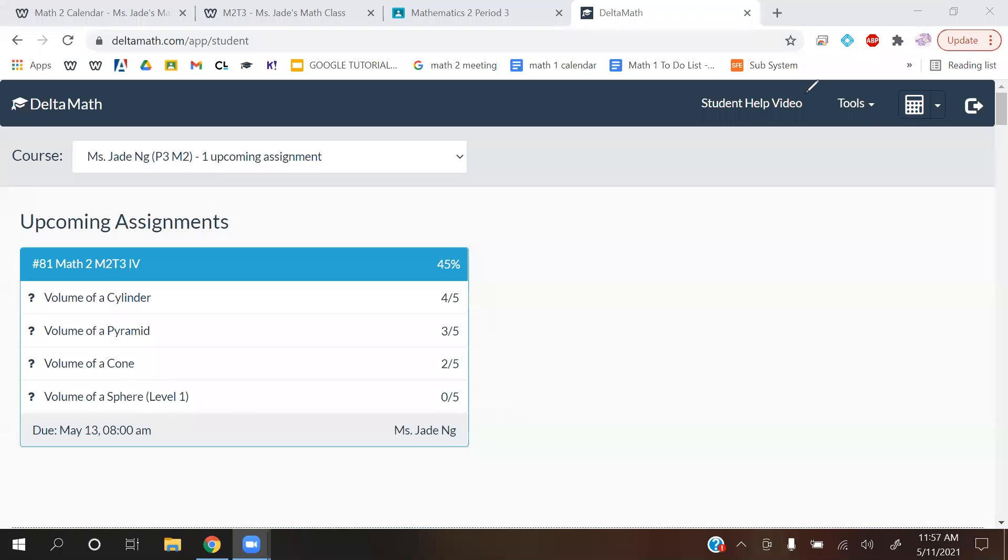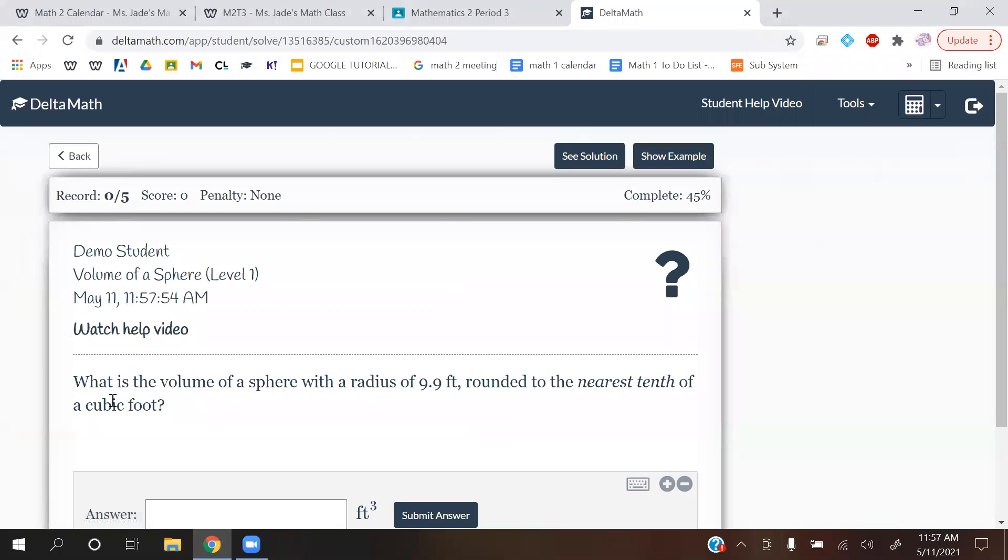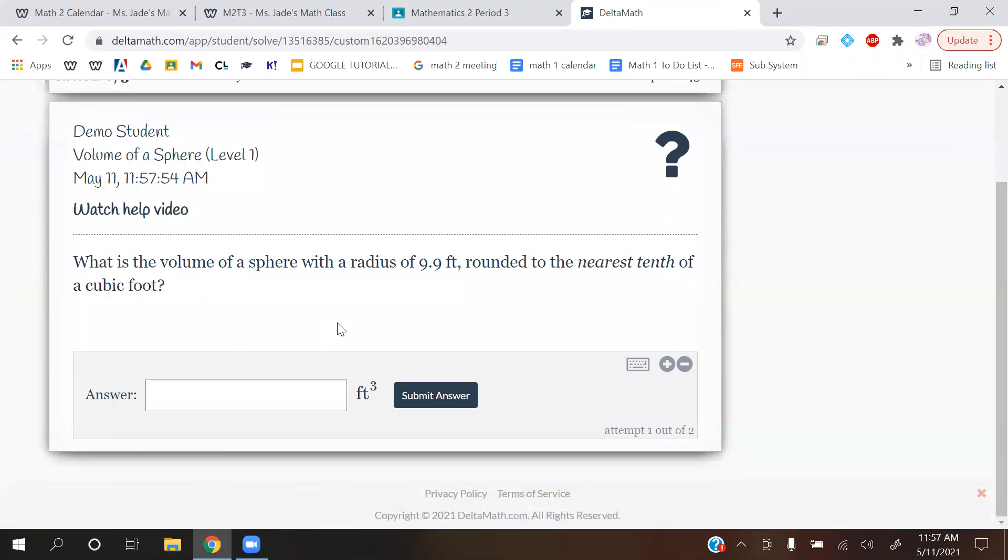Alright, last video is volume of a sphere level 1. What is the volume of a sphere with a radius of 9.9 feet rounded to the nearest tenth of a cubic foot?